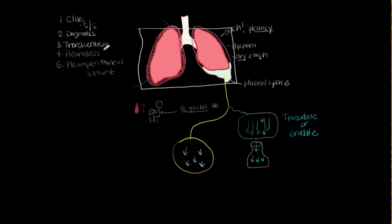So our thoracentesis would be our first line of treatment as far as to get rid of the fluid. And then pleurodesis or peritoneal shunting, pleural peritoneal shunting, excuse me, those would be more invasive procedures for someone that really has been suffering from this a lot.